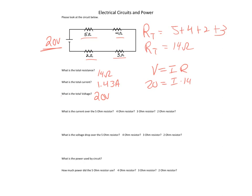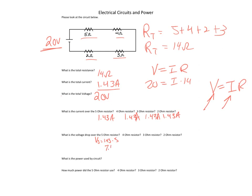The current over the 5-ohm resistor: go back and note that the current through a series circuit is constant. So at any given point we have 1.43 amps — it's 1.43 everywhere because the current is the same in a series circuit. The voltage drop for the 5-ohm resistor is V equals I times R, so 1.43 times 5 equals 7.15 volts.